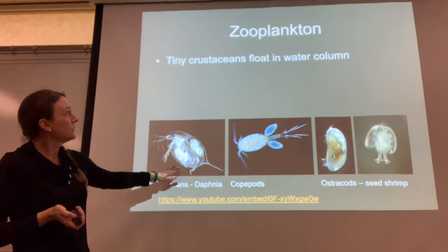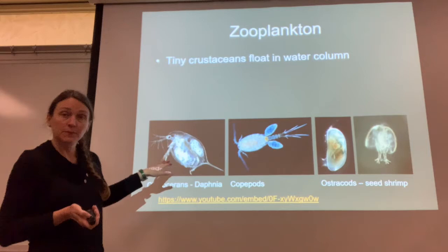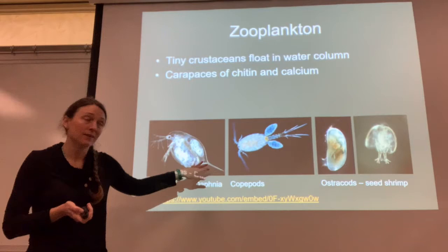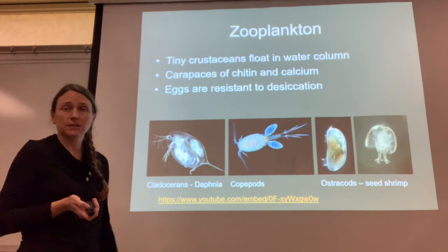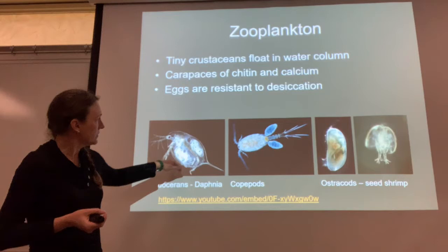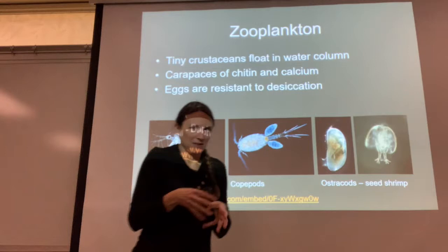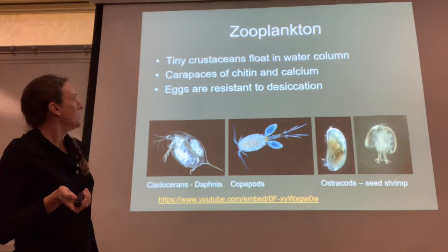The last crustaceans I'll talk about are zooplankton. They're tiny little crustaceans that tend to float in the water column, more commonly found in lakes and the ocean, but sometimes found in rivers as well. Their carapaces are made of chitin but also of calcium, which is true for all crustaceans. They often have eggs that are resistant to drying out or desiccation. Some really cool different kinds: we have cladocerans, copepods, and ostracods, which look like little clear jelly beans but open up and have little eggs inside.